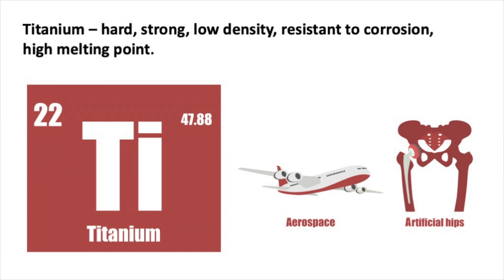Another example of a transition metal is titanium. Titanium is hard, strong, resistant to corrosion and has a high melting point. It's also unusual for a transition metal because it has quite a low density compared to other transition metals. The fact that titanium has a low density, is strong and is resistant to corrosion means it tends to be used in the aerospace industry and also in artificial limbs and artificial hips.